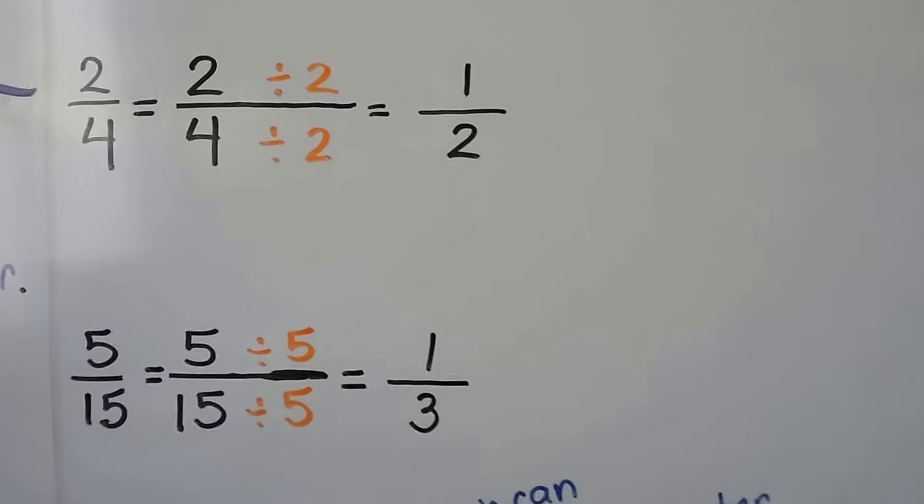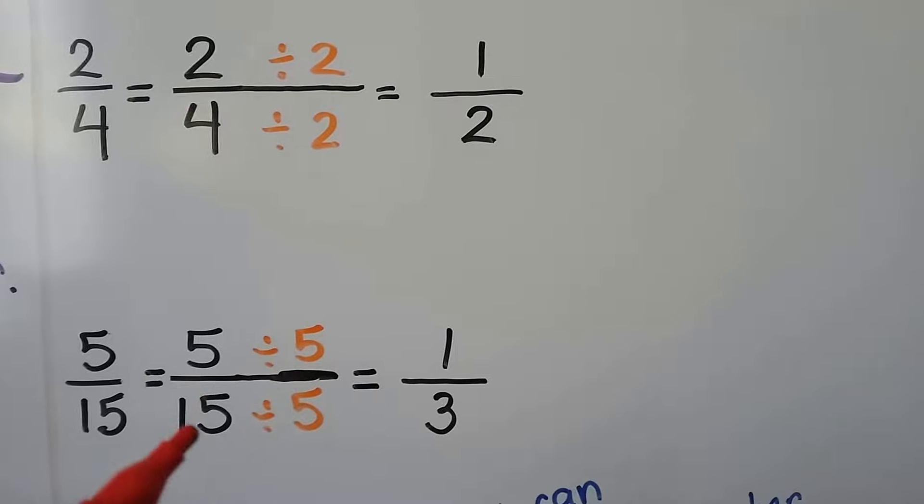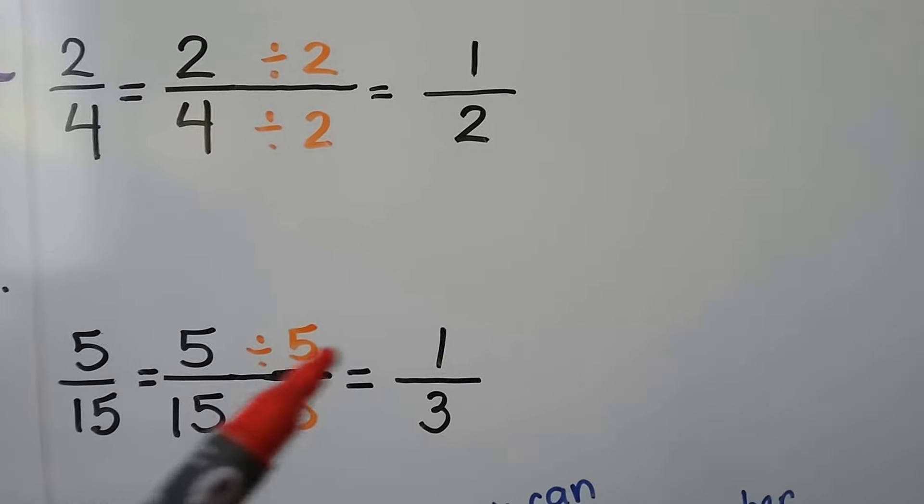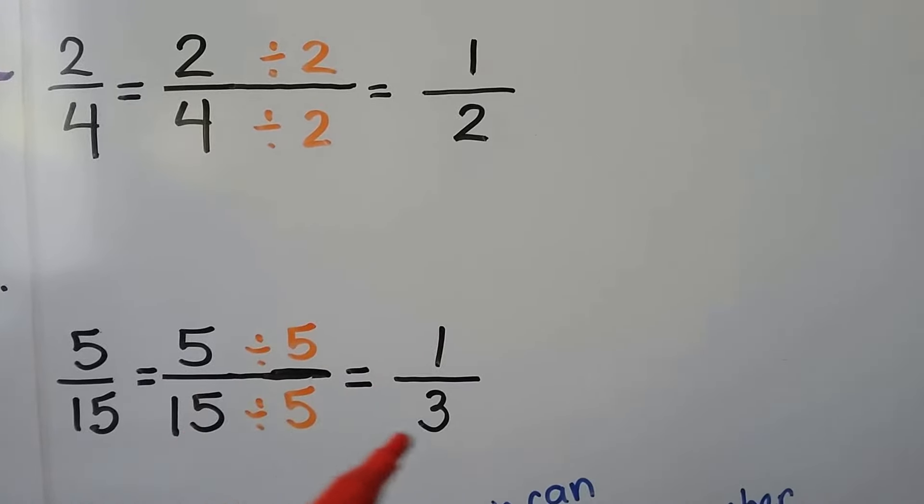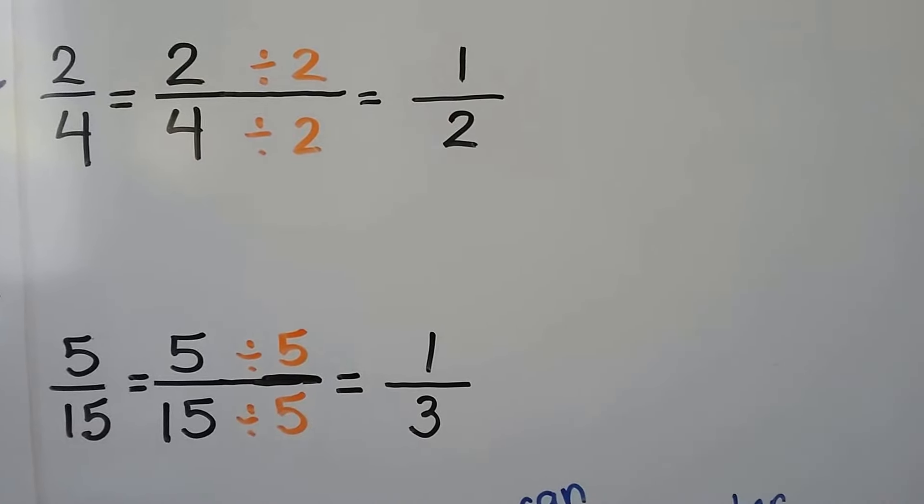Look at this one. We have 5 fifteenths. We can divide the 5 by 5 and the 15 by 5. 5 divided by 5 is 1. 15 divided by 5 is 3. 5 fifteenths is equivalent to 1 third.